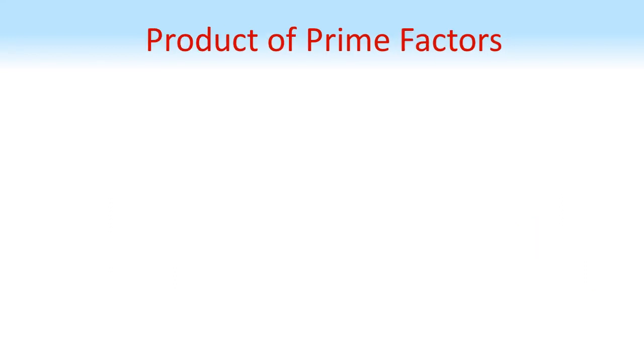Now we know what prime numbers are, we can write out numbers as a product of prime factors. Let's start with the number 30. We're going to use a factor tree to do this. The number 30 goes at the top of our tree. We're then looking for two factors which we'll multiply together to give the number 30.